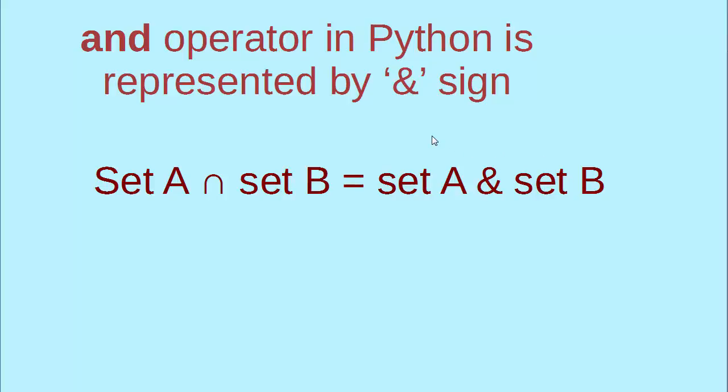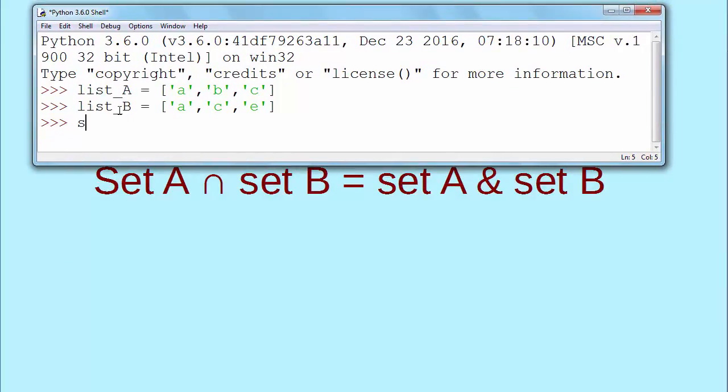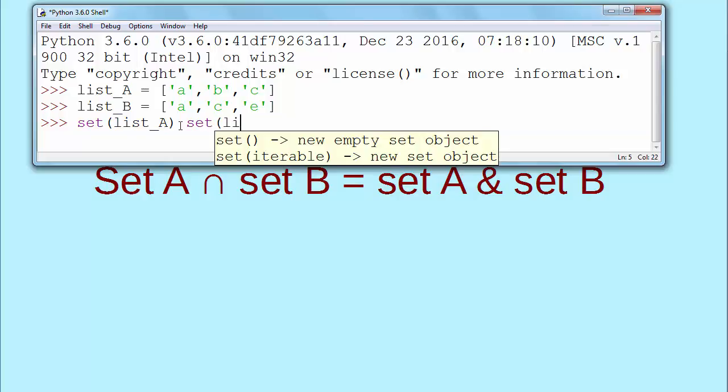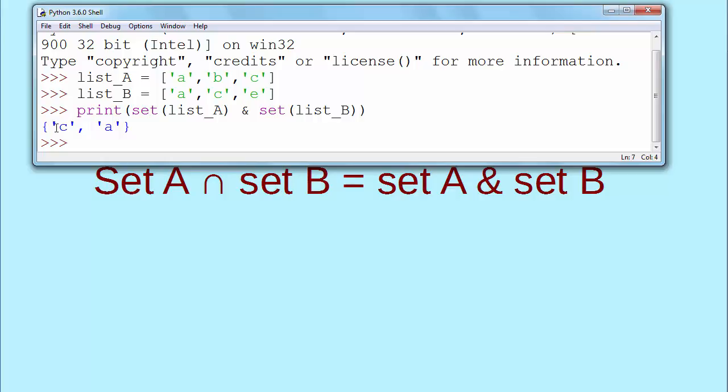So let's go to our Python Idle and let's implement our intersection between those two. First we have here list A. We want to convert it to set A. So set of list A is now set A. And let's make set B of our list B. We want to make intersection of those two sets. So we'll use ampersand sign between them for intersection. And we want to print result of our intersection. So set A intersect set B is our elements C and A.